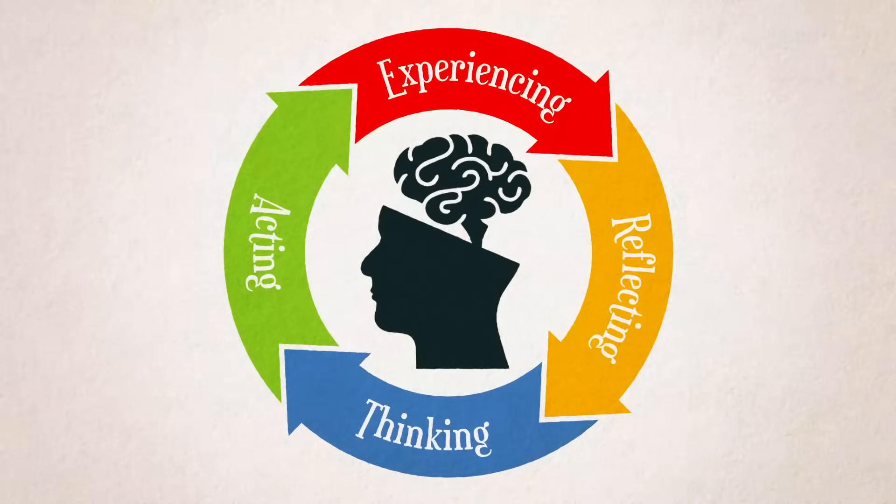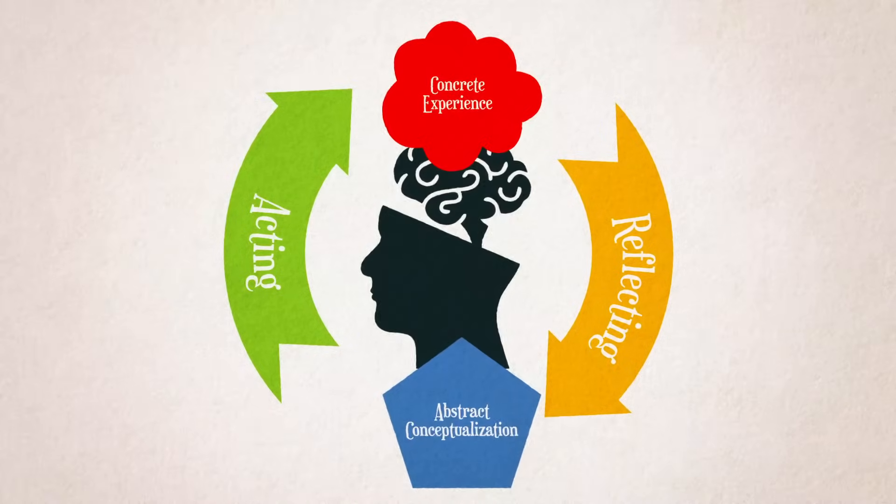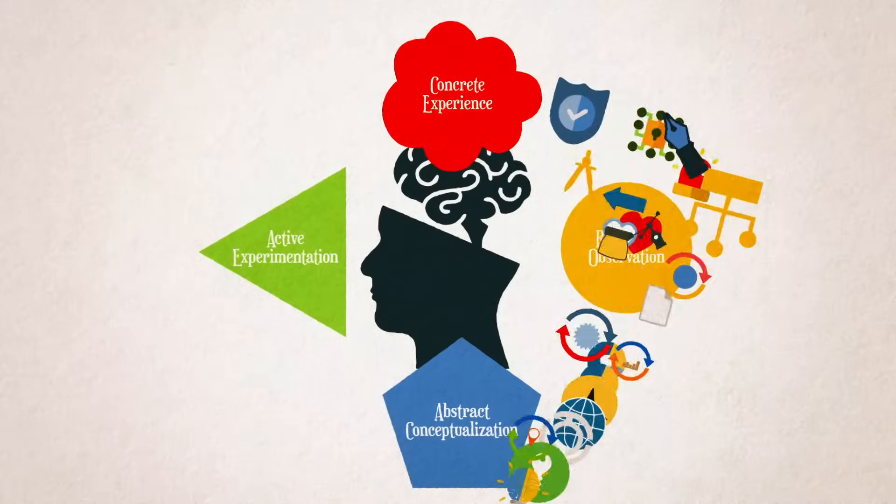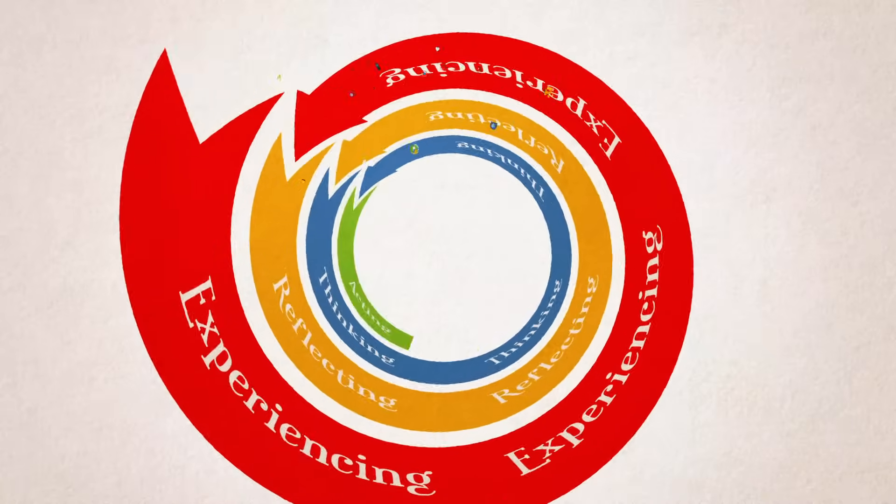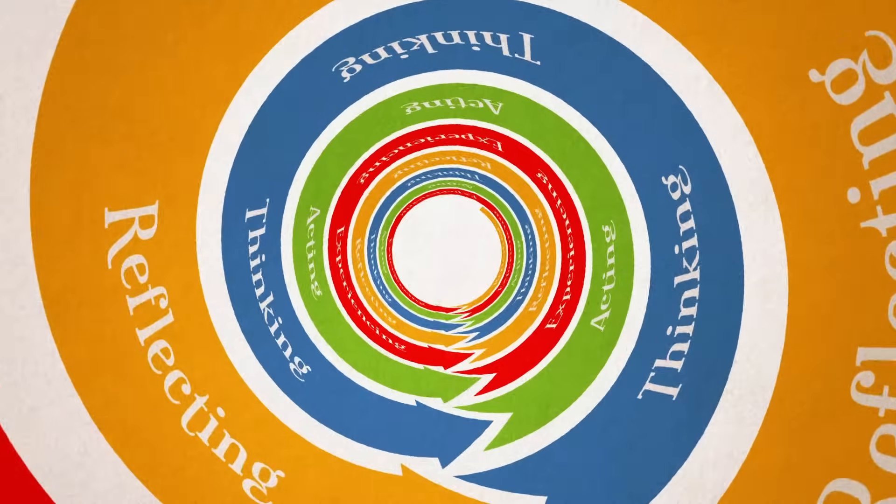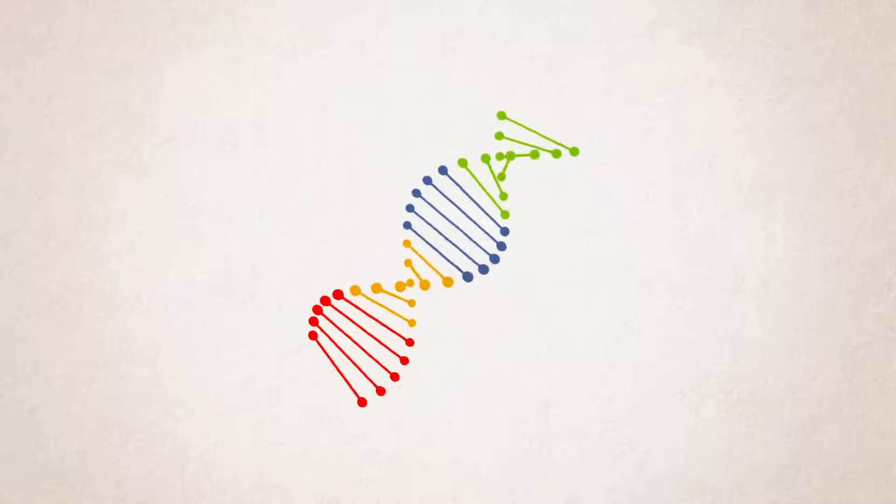In the learning cycle, we receive information through concrete experience and abstract conceptualization, and transform it through reflective observation and active experimentation. We are both receivers and creators of information. If learning has taken place, our actions affect the next experience and the cycle continues with ever-increasing depth of understanding and skill. Our cycle doesn't just repeat, it evolves.